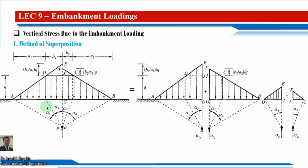The trapezoidal section of the embankment ABCD may be divided into triangular sections by drawing a vertical line through point P. If sigma z1, sigma z2, sigma z3, and sigma z4 are vertical stresses at point P due to the loadings of the four respective figures, we can apply the superposition method.